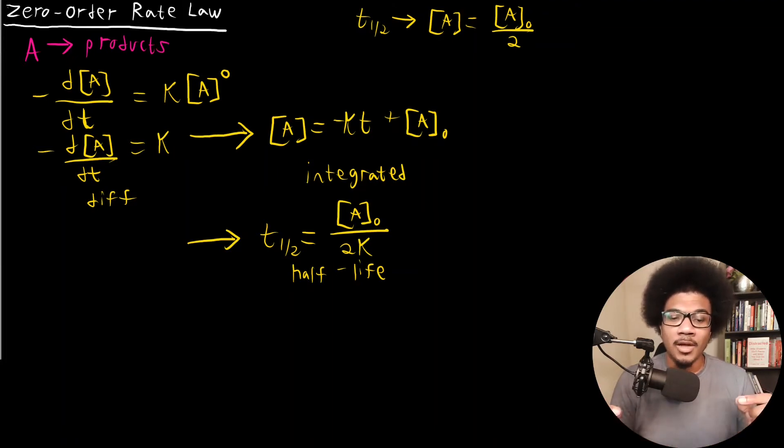If a reaction that depends on a single reactant falls into a bucket of simple kinetics, it falls into one of these general buckets: zero-order, first-order, or second-order.